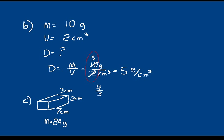Look at practice problem C. We have a rectangular solid with a mass of 84 grams, and we want its density. First, calculate the volume using length times width times height: 7 times 2 times 3 equals 42 cubic centimeters. Then density equals mass divided by volume: 84 grams over 42 cubic centimeters. Working numerics and units separately, 84 over 42 is 2, giving 2 grams per cubic centimeter.